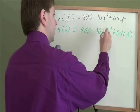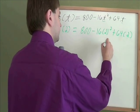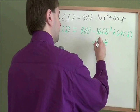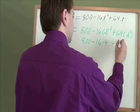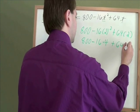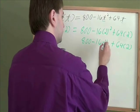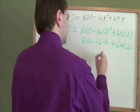What is 2 to the second power? 2 times 2 is 4. Everything else stays the same. 16 times 4, that is 64.